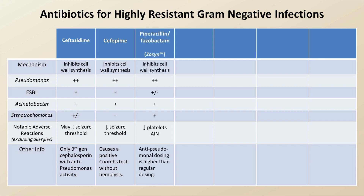Piptazo or Zosyn has excellent Pseudomonas coverage, has so-so Acinetobacter and Stenotrophomonas coverage, and occasionally but not usually covers ESBL. Remember that the anti-pseudomonal dosing of Zosyn is higher than regular dosing. The carbapenems, specifically imipenem and meropenem, have excellent Pseudomonas and ESBL coverage and some Acinetobacter. The activity of ertapenem against Pseudomonas and ESBL is less robust and should be avoided when these pathogens are suspected.